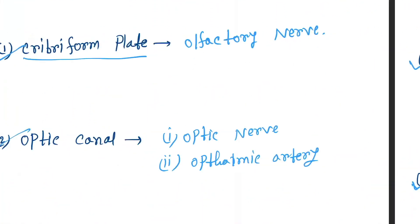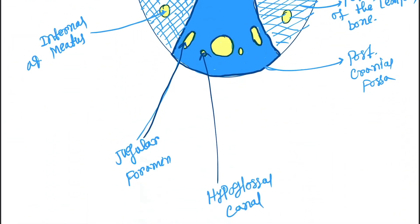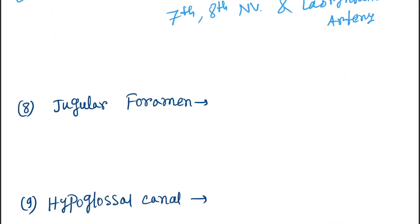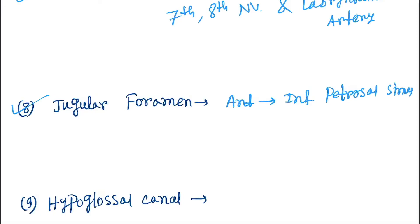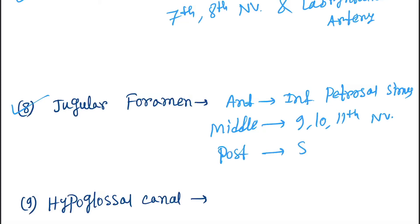Next is the jugular foramen. The structures passing through it are: from the anterior portion, the inferior petrosal sinus; from the middle portion, the ninth, tenth, and eleventh cranial nerves; and from the posterior portion, the sigmoid sinus.